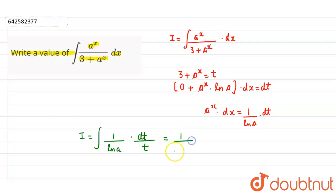So we can write 1 upon natural log of a. And what is the integration of dt by t? It is log mod t plus c.